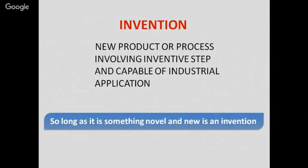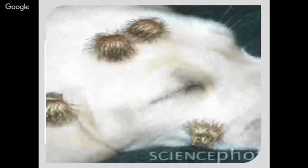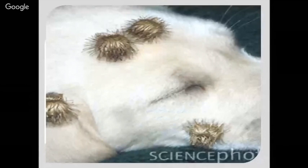What exactly can be patented? An invention can be patented. An invention is a new product or process involving an inventive step and capable of industrial application. The innovation must be new and novel, and applicable in various areas of life.